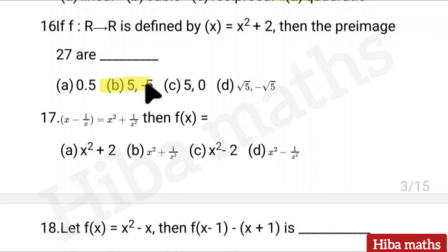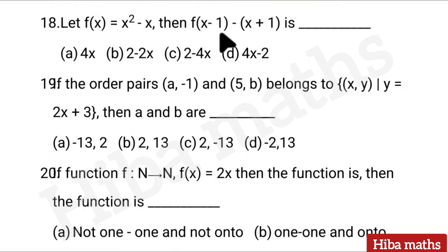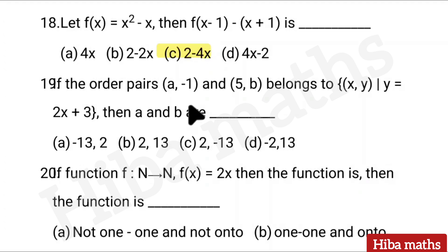Option B: {5, 0, root 5}. Seventeenth question: x − (1/x) = x² + (1/x²), then f(x) is equal to — 4 options given, correct answer: option A. Eighteenth question: Let f(x) = x² − x, then f(x−1) − f(x+1) — substitute and solve, answer: option C — 2−4x.